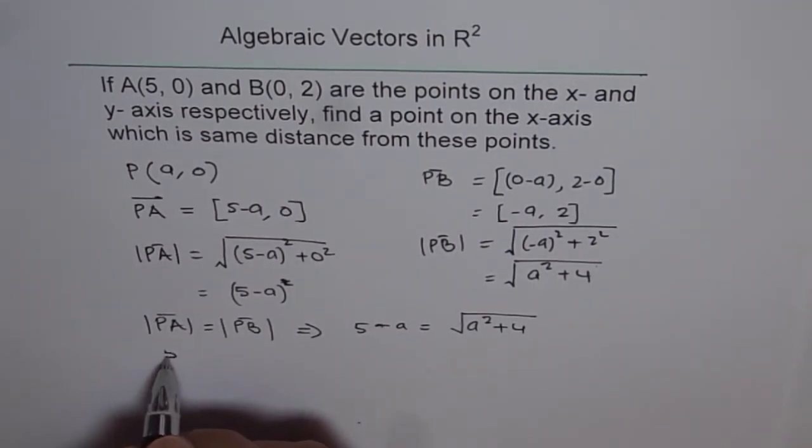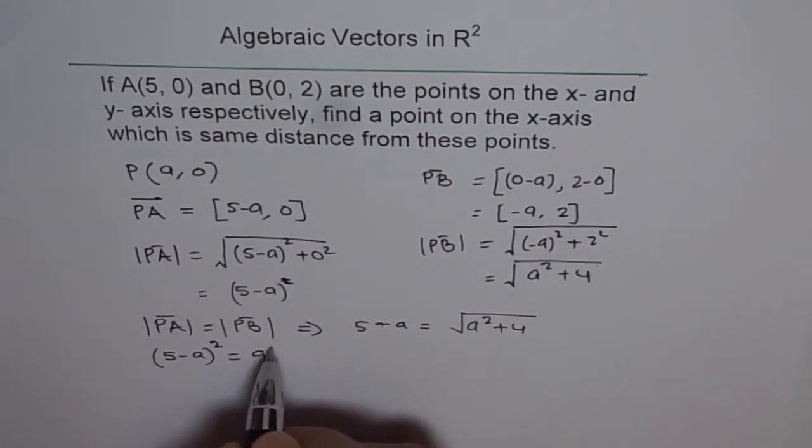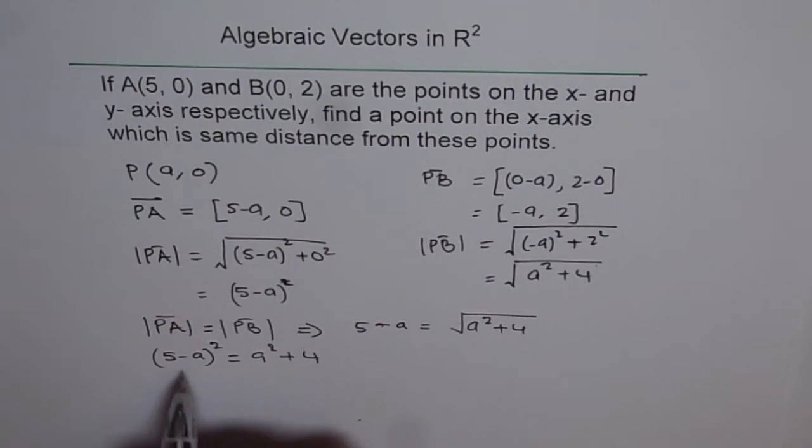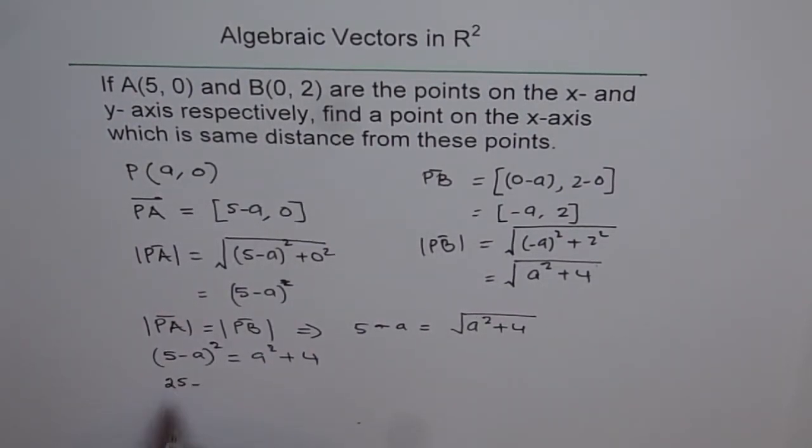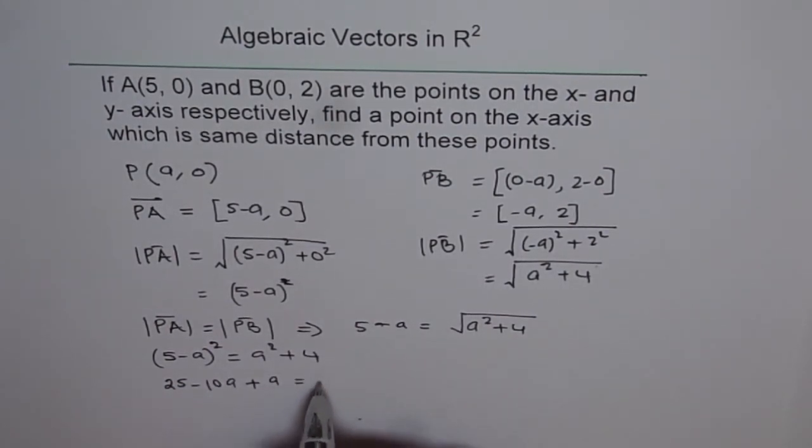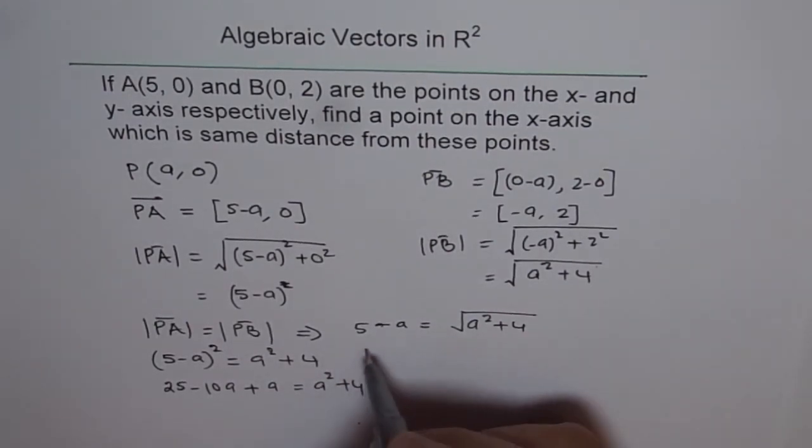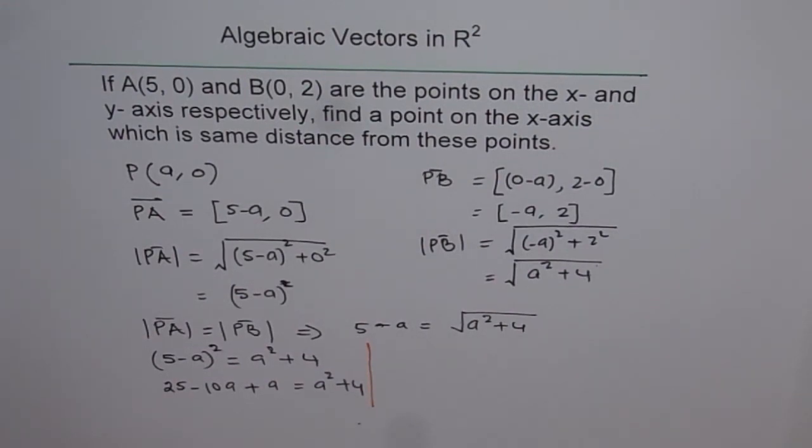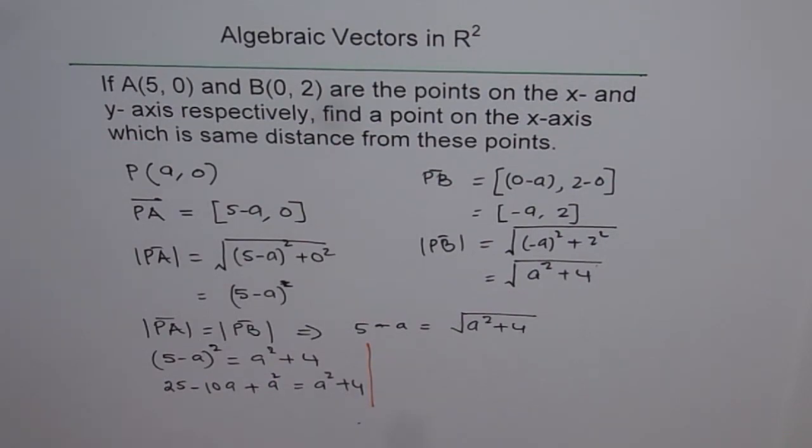So we get (5-A)² equals to A² plus 4. And (5-A)² is 25 minus 10A plus A², which is equal to A² plus 4. And now we can bring all the terms on the same side and solve for A.